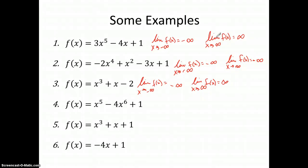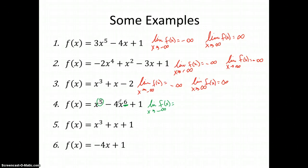I encourage you to try these out and quickly quiz yourself to see if you've got the rules down. Now, there's the degree — I just didn't arrange it correctly. Our degree is six and our leading coefficient is negative four. So that's going to give me negative infinity on both ends. We don't want to fall into the trap of missing the correct degree — make sure you identify the right degree.